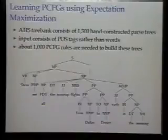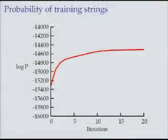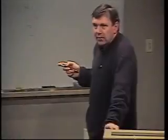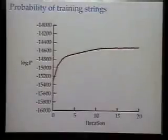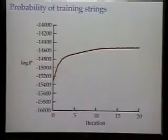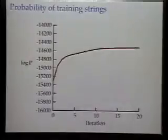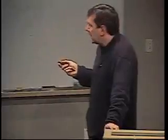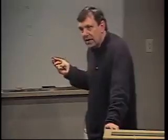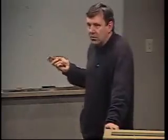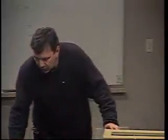We can just pretend we're given the strings as training data, feed those into the expectation maximization algorithm, and see whether it can learn something which approximates these trees. The EM algorithm works by trying to find a local maximum of the production probabilities, tuning the grammar to make the strings as likely as possible. If we look at the probabilities of the strings over the iterations of the algorithm, we can see the probability is systematically rising. So the expectation maximization algorithm is in fact working as advertised — it's systematically altering rule probabilities to make the strings more and more likely.